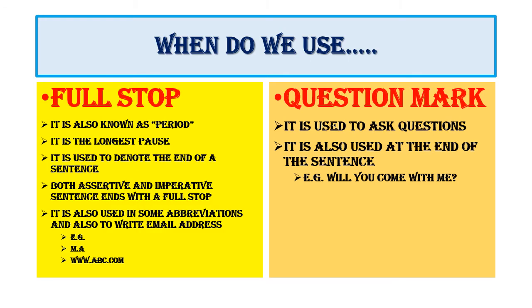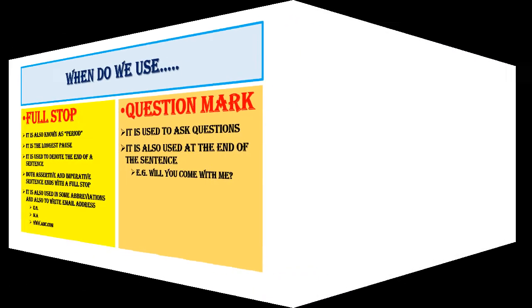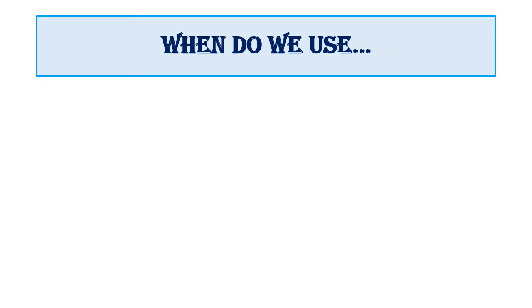Next we have the exclamation mark and comma. The exclamation mark is used at the end of a sentence to express surprise. It is also used after certain words that highlight striking thoughts — for example: bang! alas! crash! After all such words, you use the exclamation mark.